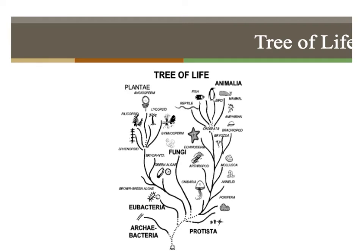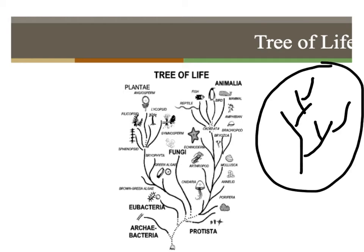Here is another example of the tree of life, showing the branching. When we talked about evolution and you saw Darwin's Dangerous Idea, you saw the branching. In Darwin's book The Origin of Species, one of the only diagrams he had showed something like this — a branching pattern with a common ancestor, and then different groups branching off of that.